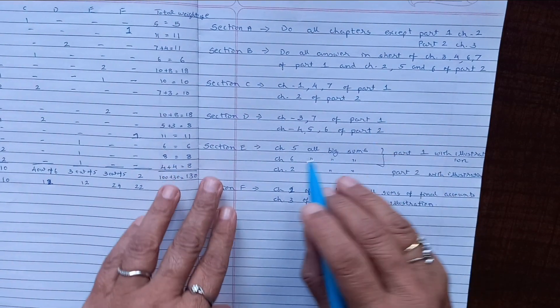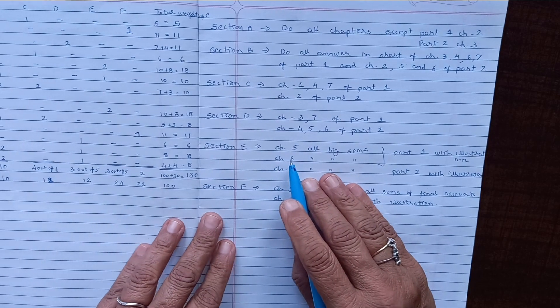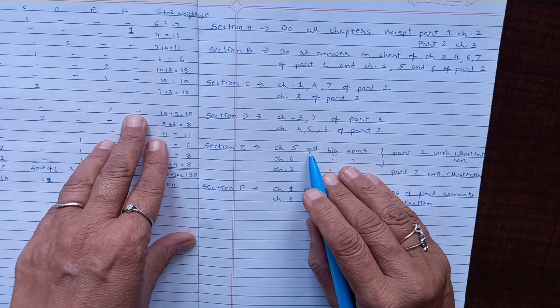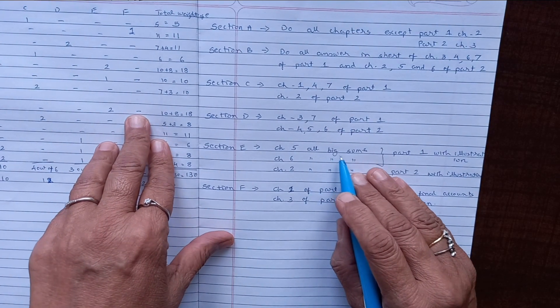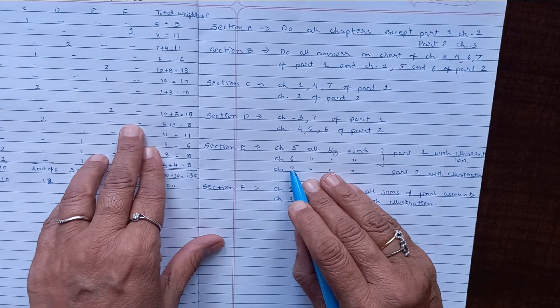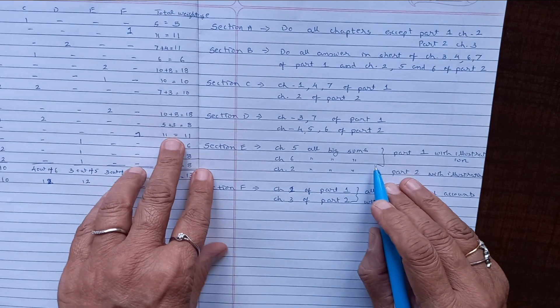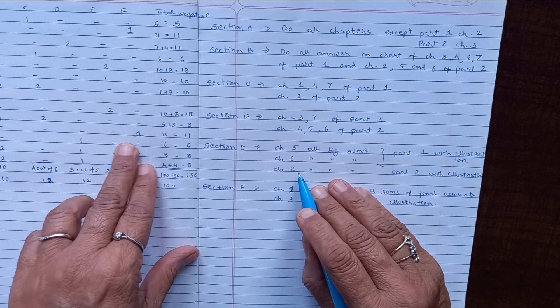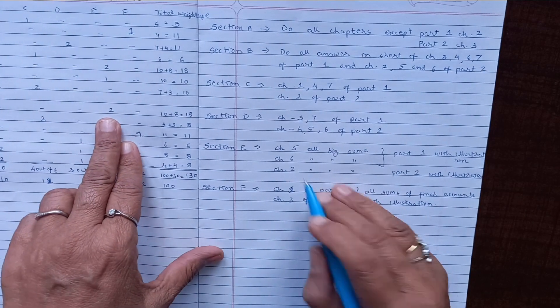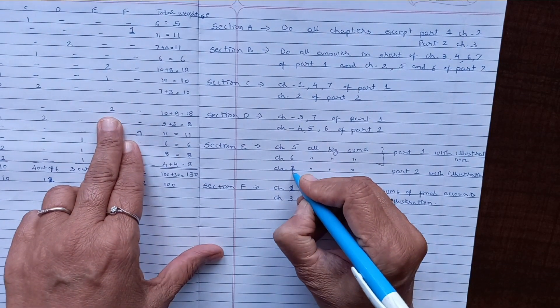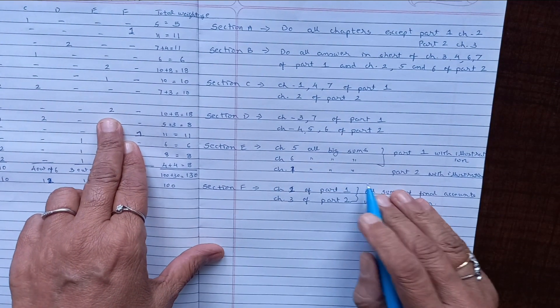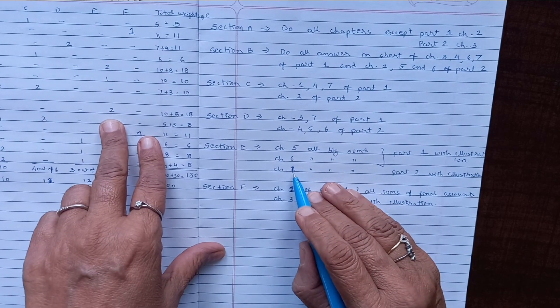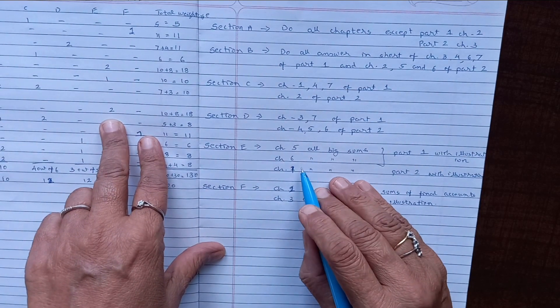For Section E, very precisely you can go for chapter number 5, admission, that is part one; chapter 6, that is retirement of part one; and chapter 2, that is share capital, our chapter 1, share capital of part two. So here, eight mark questions—five questions will be there, three you have to attempt.